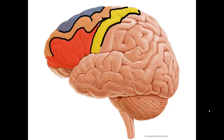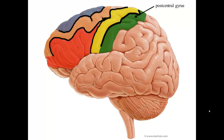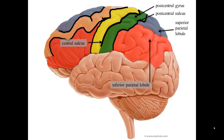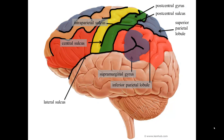When studying the parietal lobe, remember that the postcentral gyrus is just posterior to the central sulcus. It is separated from the rest of the parietal lobe by the postcentral sulcus. The superior parietal lobule and inferior parietal lobule are divided by the intraparietal sulcus. The supramarginal gyrus surrounds the posterior part of the lateral sulcus. The angular gyrus is also considered part of the parietal lobe, although it surrounds the posterior part of the superior temporal sulcus, which we will show in a bit.